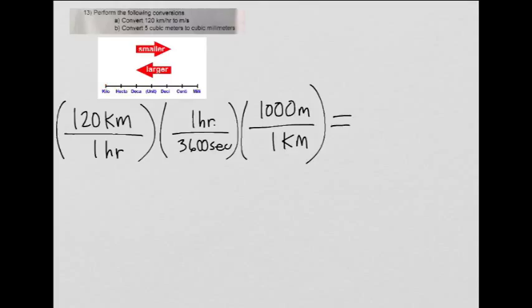Here we have to convert 120 kilometers per hour to meters per second. My assistant already drew out all the steps, so let's just do the math. Hour cancels out with hour, kilometer cancels out with kilometer.